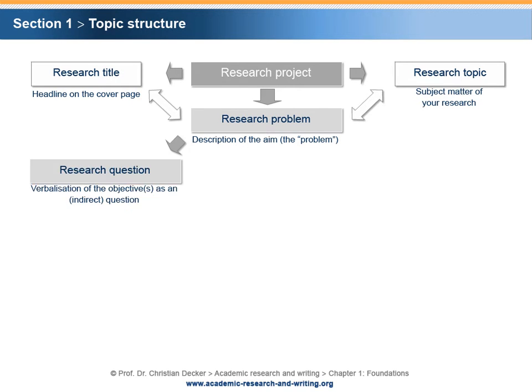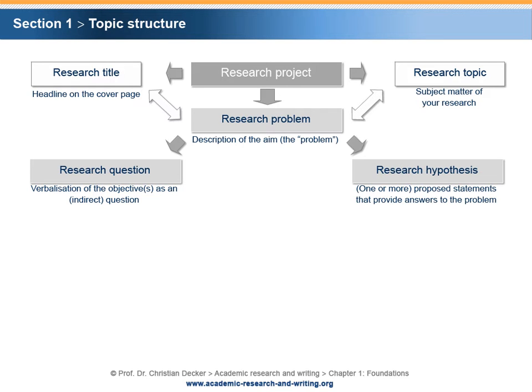Principally, one or more research questions have to be formulated that explicate the aim of the research project. Typically, the verbalization of the objectives takes place by formulating an indirect question. Moreover, some research projects require the formulation of a research hypothesis. A research hypothesis is a proposed statement that provides an assumed answer to the research problem. Depending on the complexity of the research problem, there can be one or more proposed statements.